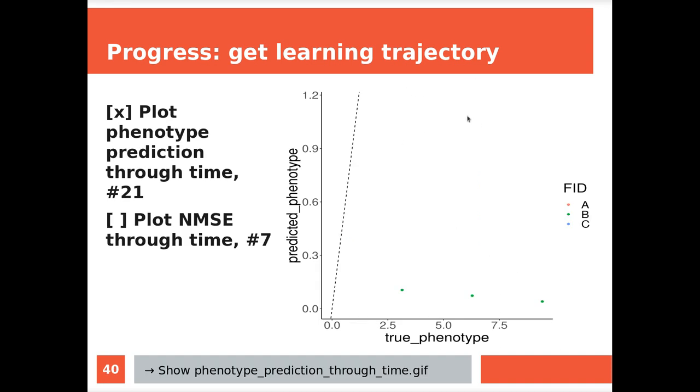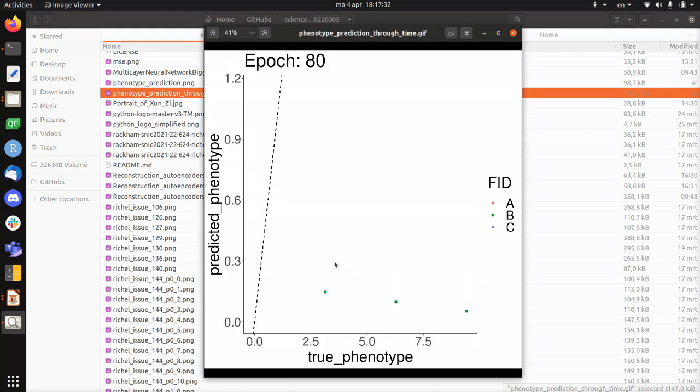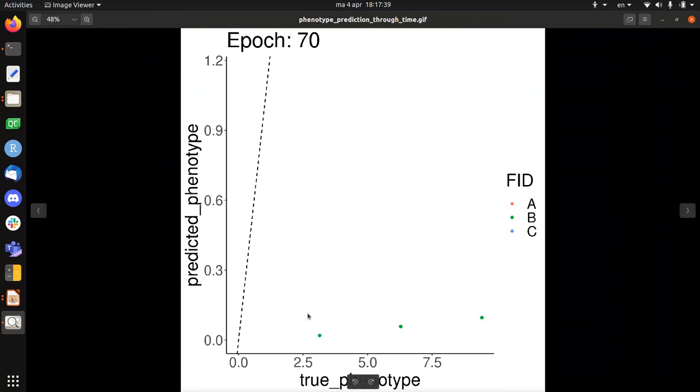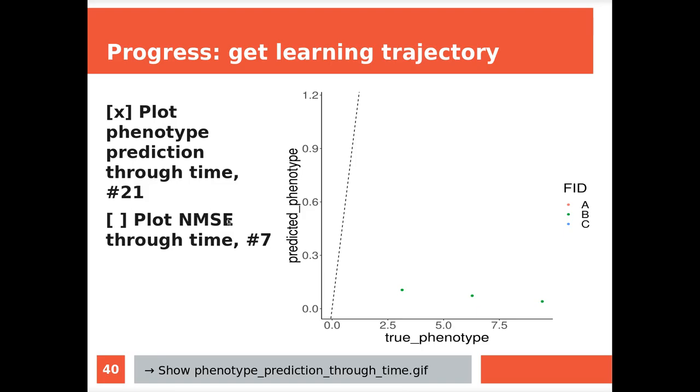Also the learning trajectory. So I want to see how well it predicts the phenotype. Well, I can plot this now in time. You can see for the different epochs for the true phenotype and the predicted phenotype, how well it does. You see that it overlaps and it's also trivial data here. But what's already weird is I would expect these points to go to the diagonal. They don't, they just go down first. So that is interesting in its own way, but it's not the most interesting thing. Ideally I want to see the normalized mean square error through time, which I have not done yet. I'm working on that as we speak.